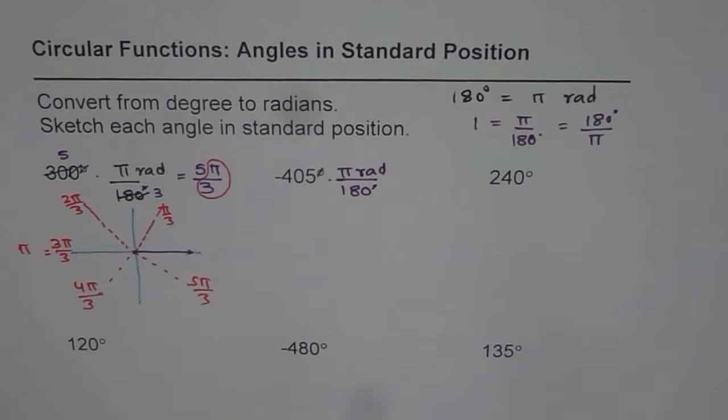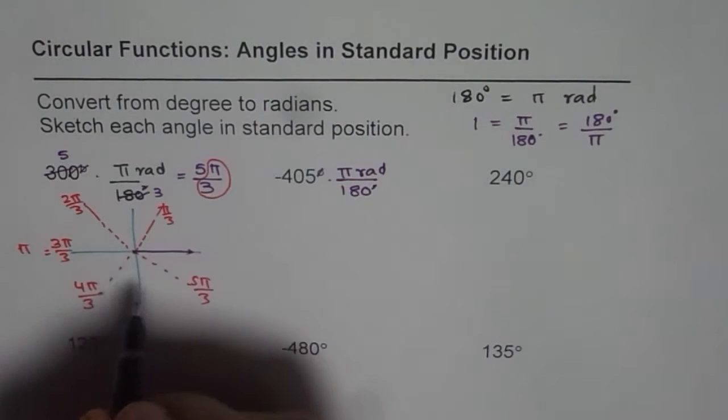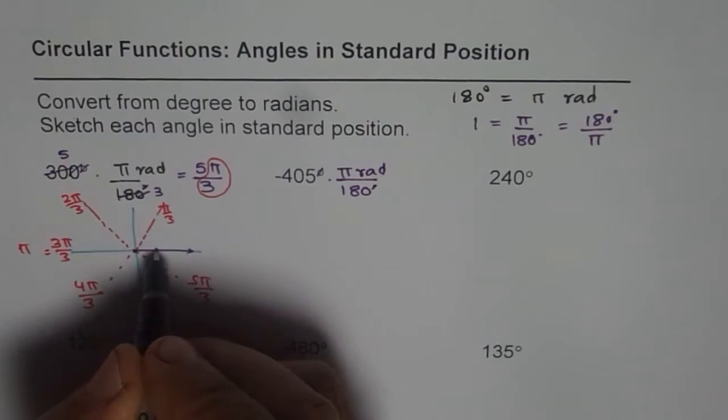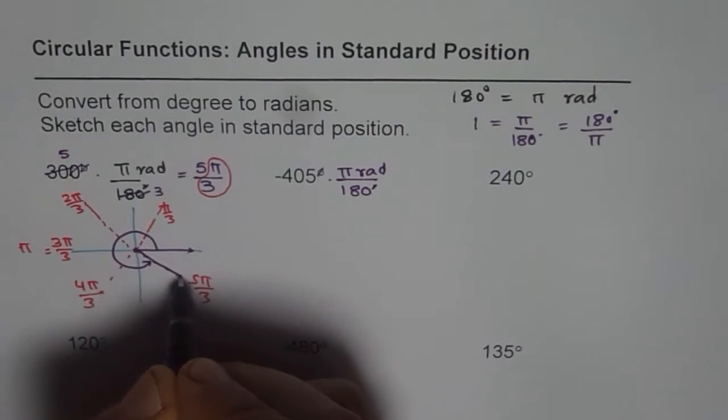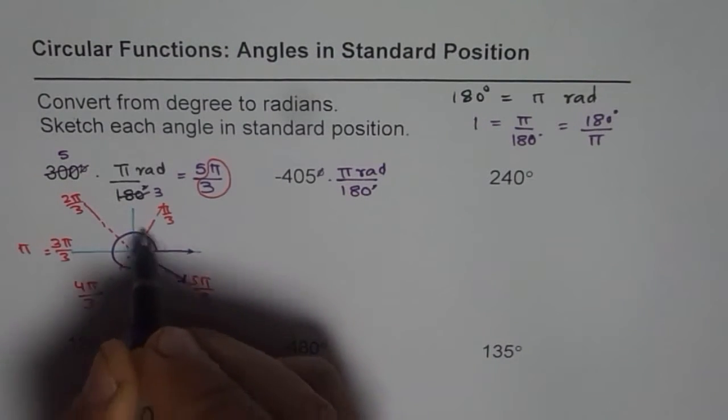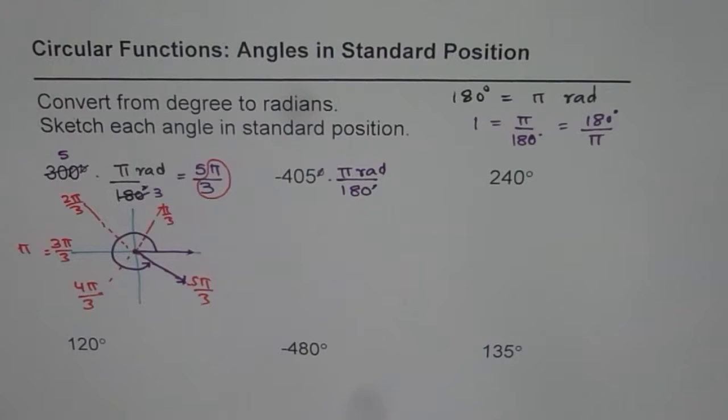Now when the angle is positive, the direction should be counter-clockwise. So from the initial arm, the terminal arm moves counter-clockwise, 5 pi by 3. That is the position. And there you go. So this angle is 5 pi by 3 or 300 degrees.